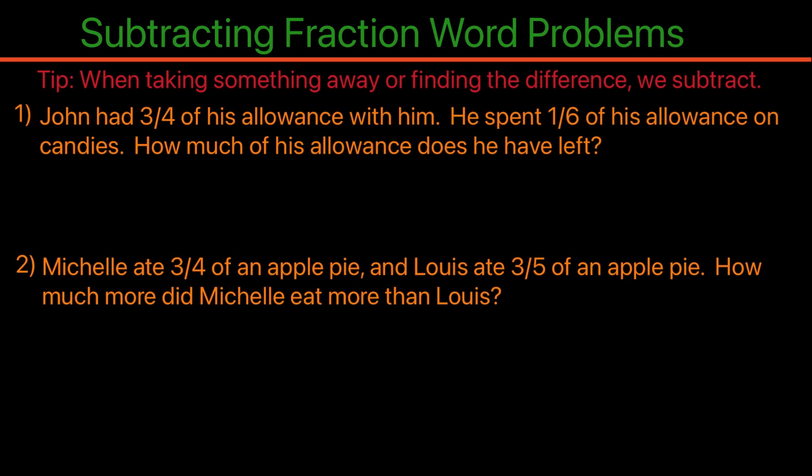Let's take a look at the first example. John had three-fourths of his allowance with him. He spent one-sixth of his allowance on candies. How much of his allowance does he have left? We are starting with three-fourths of his allowance and taking away one-sixth. When we are taking away something, we use subtraction. So we're going to take three-fourths minus one-sixth.